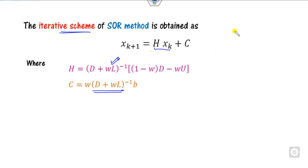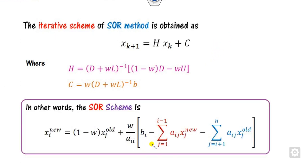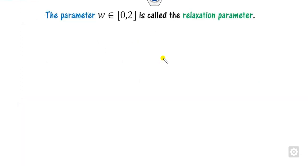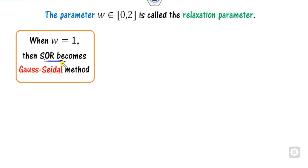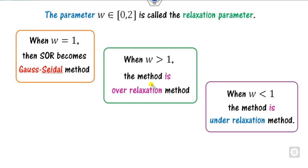You can also write this in terms of equations component-wise. When omega equals 1, this scheme becomes the Gauss-Seidel method. The range of omega is between 0 and 2. When omega equals 1, the SOR method reduces to Gauss-Seidel. When omega is greater than 1, it is called over-relaxation; when omega is less than 1, it is under-relaxation.